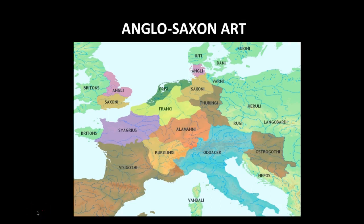We're finally going to start talking about the pieces from this time period. Before we get started on our first piece, I wanted to show you the different tribes we talked about. With the fall of the Roman Empire, various tribes had pushed in and kicked out the Romans, leaving a large map of different tribes, many of which were nomadic. So a lot of the art from this time period is small and portable so they can transport it.